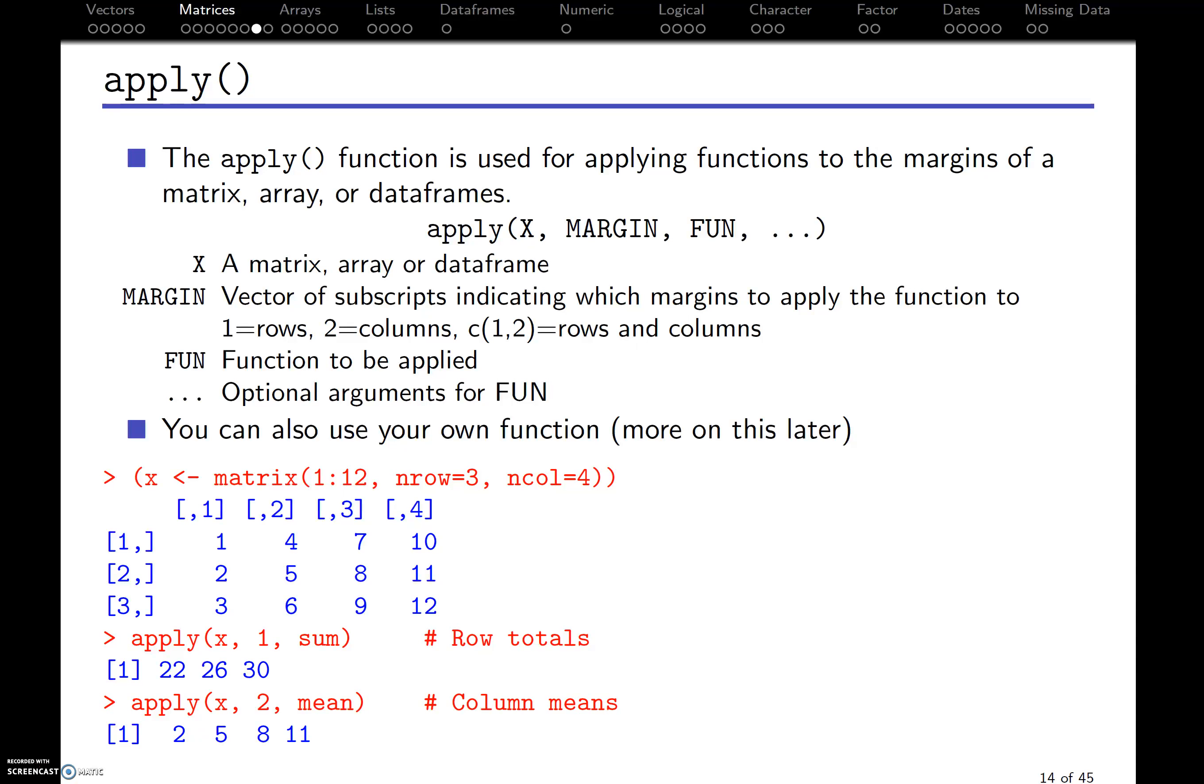The apply function will apply any function. It can be a user-defined function that we'll learn how to do later in the course or something already programmed in R. And it'll apply it across some kind of margin of your matrix or your array or your data frame. So the syntax looks like this. It applies a function, so of course, you have your arguments of the function in here. X is a matrix array or data frame. Margin just tells you how should I apply the function across the rows, across the columns, or across the rows and columns. And then you have to name the function to be applied. And then if there are options within the functions, you can list them in that dot, dot, dot.